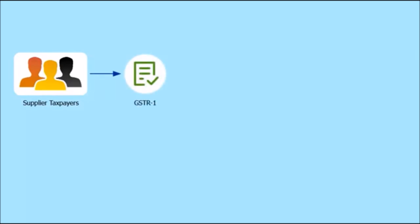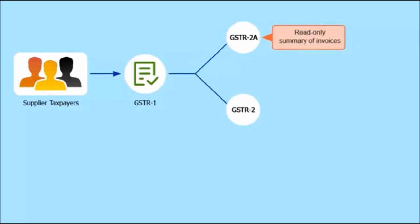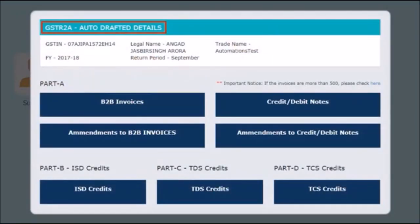Once the supplier taxpayer uploads invoice data in GSTR-1, the GSTR portal auto-populates the details in GSTR-2A and GSTR-2 of the respective recipients based on their GSTIN. GSTR-2A is a read-only summary of invoices based on the data received from the suppliers. The invoices saved as well as submitted by the suppliers will be visible in GSTR-2A, indicated by their status.